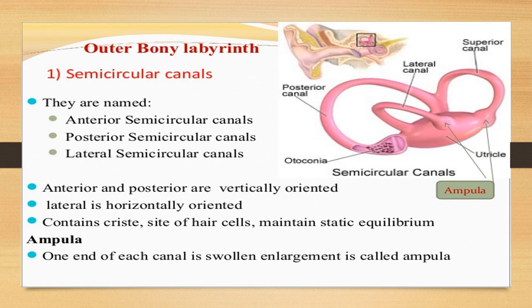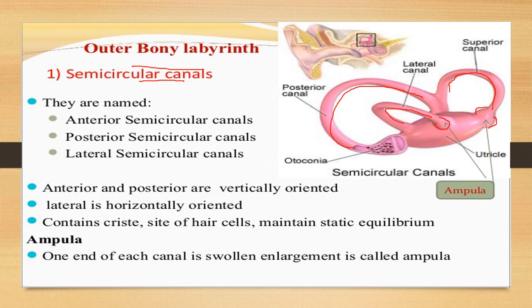The bony labyrinth includes three semicircular canals: the anterior, posterior, and lateral semicircular canals. Each canal has a bulged structure at its opening called the ampulla.